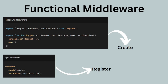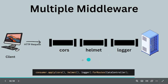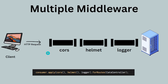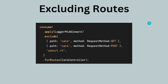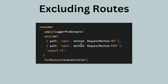The registration is the same as for a class middleware — you use consumer.apply() and .forRoutes() for the routes you want. Multiple middlewares can be applied using a comma inside apply(), for example: cors, helmet, and logger. The request would go sequentially — first cors, then helmet, then logger, and then the controller. You can also exclude certain routes using .exclude(), providing the path and HTTP method for which the middleware should not be applicable.